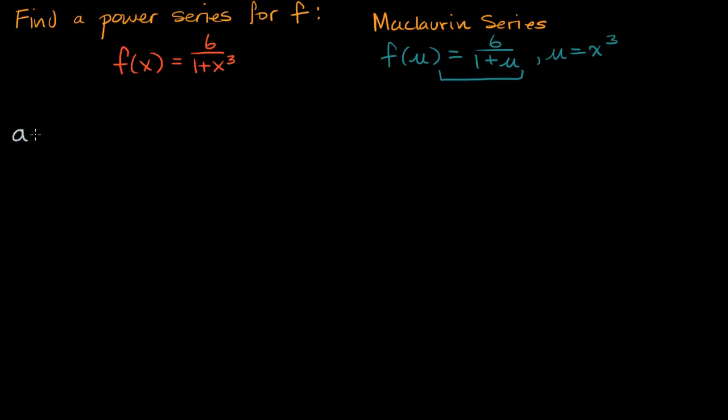If I have a + ar, so a is my first term, r is my common ratio, plus I'm gonna multiply it times r again, plus ar², plus ar³,